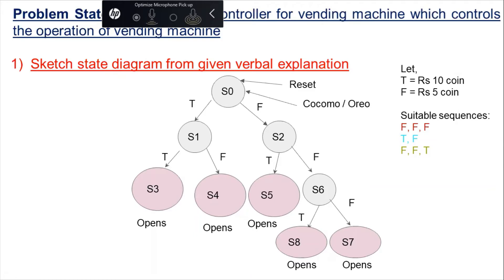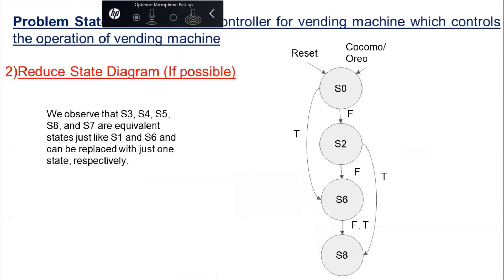So in order to minimize it, we'll now only see the transition that will mean the change in state. Here we have substituted S3, S4, S5, S8, and S7 by only S8. Similarly, S1 and S6 is replaced by only one state that is S6.